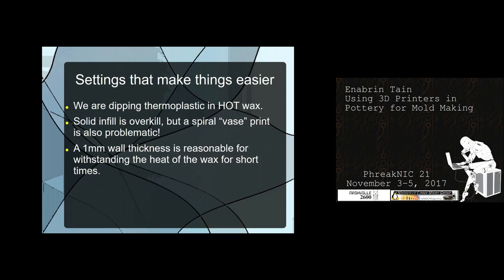Another thing to consider when doing your 3D prints is that plaster will stick to PLA very, very well. So what we do is dip the positive into wax, because plaster won't stick to wax. When you're printing this thing, keep in mind that if you have really thin walls or delicate parts, you're dipping this into hot wax — it's a thermoplastic, and it can and will warp your stuff. With this bowl, I actually didn't print a solid thing — I made the wall just three millimeters thick.